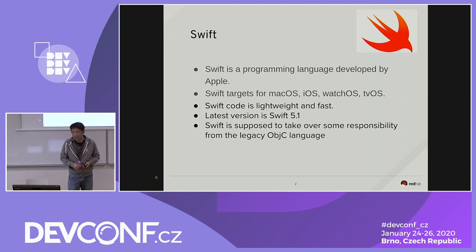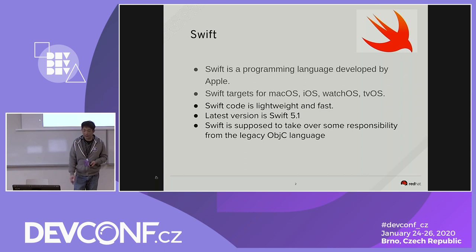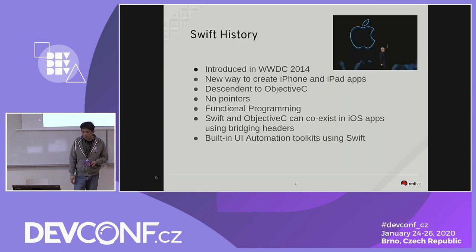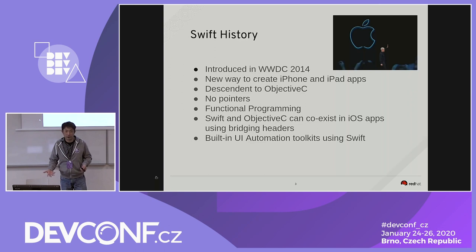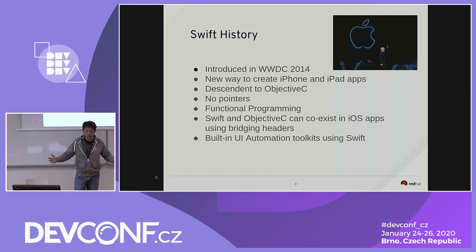Back in 2014, when Swift was initially introduced, it was supposed to take over some of the responsibility from Objective-C. Objective-C is a legacy language for iOS. Apple came up and said Swift is the new way of developing iPhone and iPad apps — a descendant of the next generation of Objective-C. The beauty of Swift is there's no pointer; you don't need to worry about memory allocation or memory management.